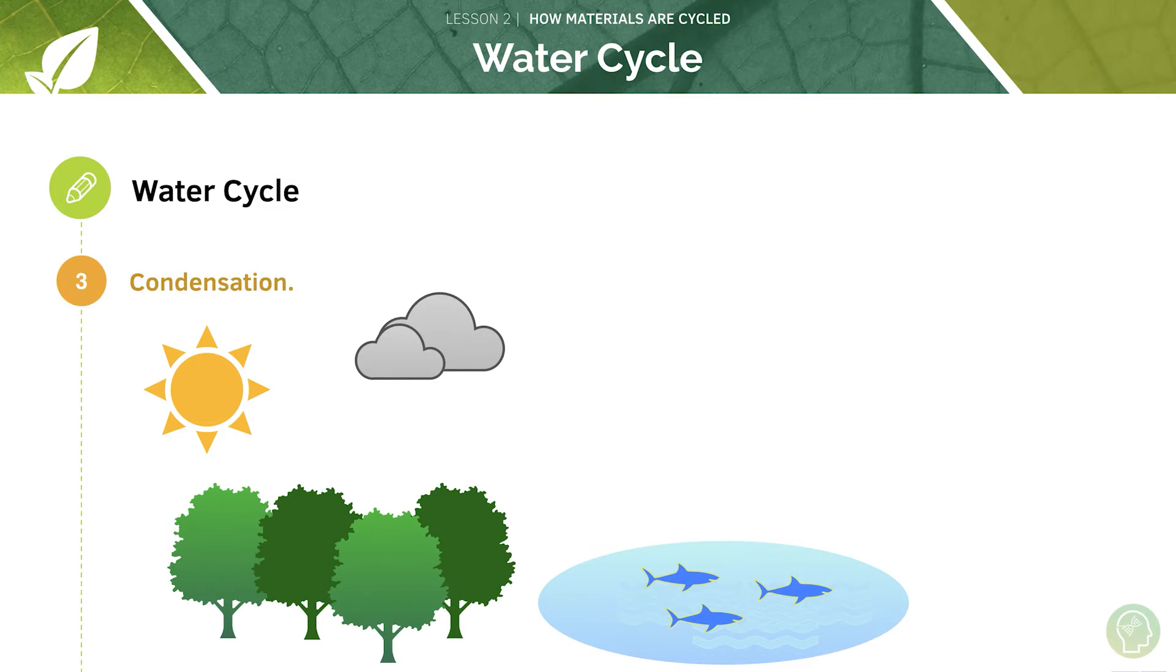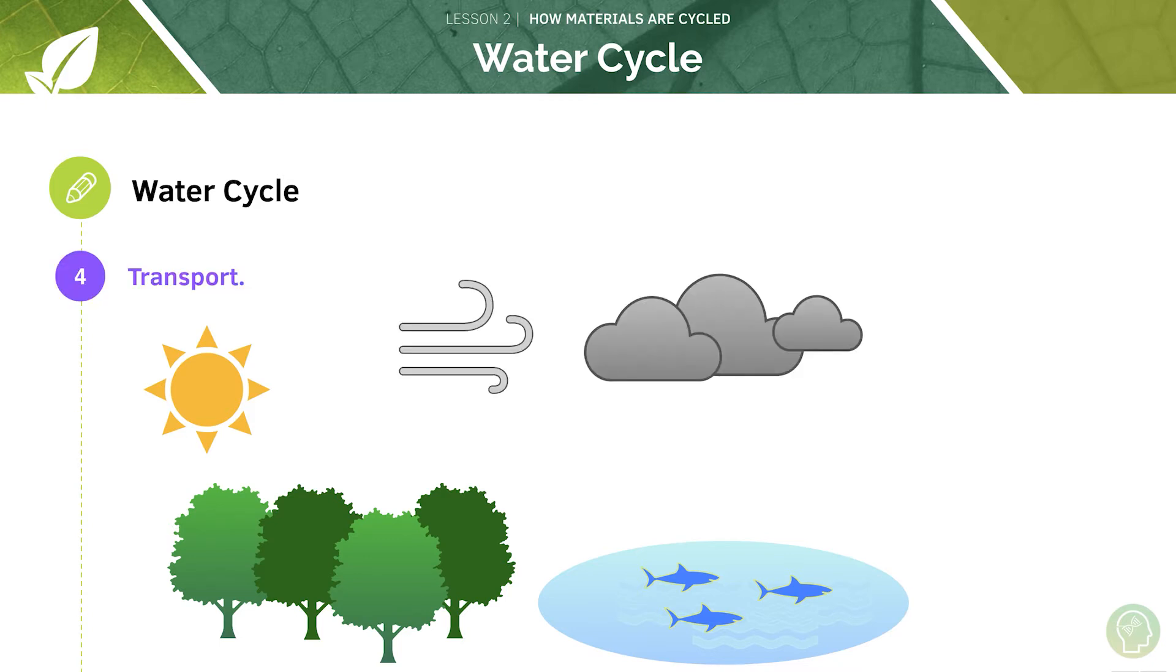After evaporation and transpiration which would turn water to the atmosphere, the water vapour cools forming liquid clouds. When liquid clouds are formed they can be pushed far distances by wind.